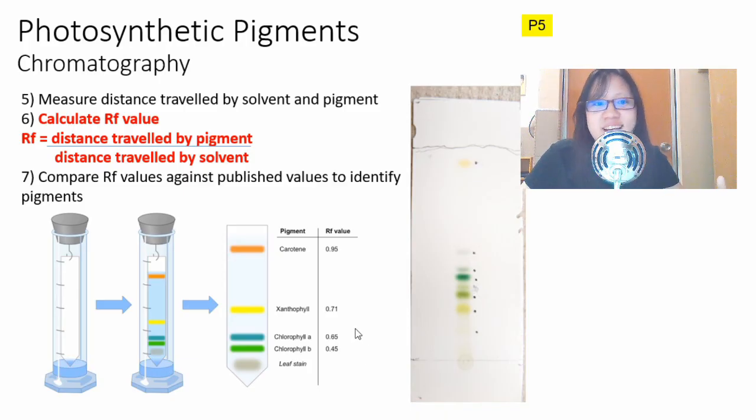That's it for part one on chloroplast pigments. In this part we talked about how there are different types of pigments, how they are arranged, where they are found, and how to separate and identify them. In the next video you will see how photosynthetic pigments actually work in more detail. If you don't understand it yet, don't worry. In the next video all will be explained. Till then rest well and take care, see you.